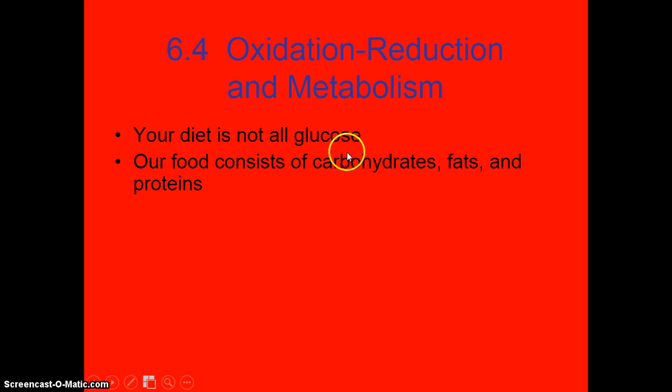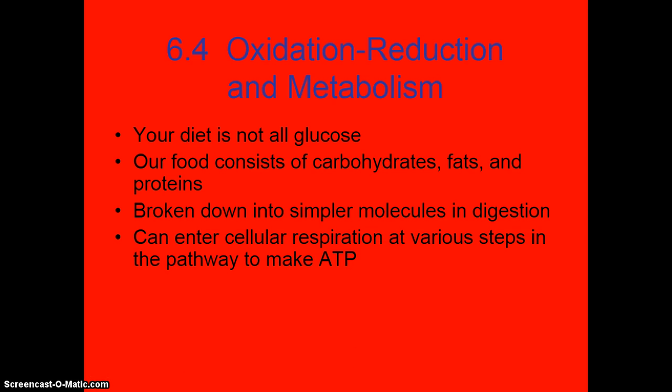Carbohydrates are glucose and different forms of glucose, fats, and then the proteins, of course, come from meat sources. So these are broken down into simpler molecules during digestion, and they can enter cellular respiration at different steps in the pathway. The whole process is making ATP.